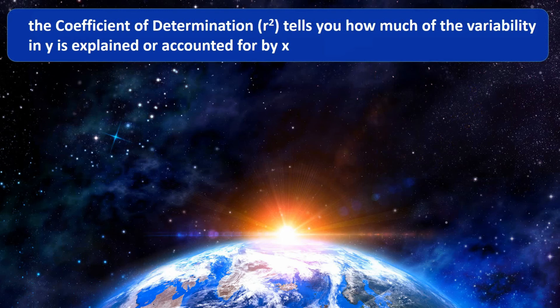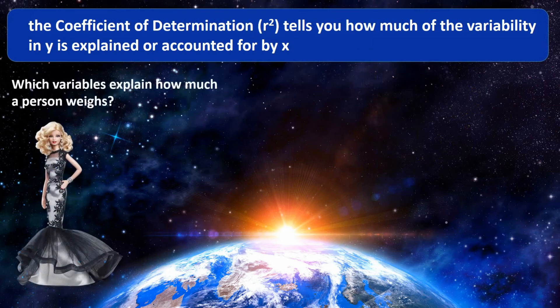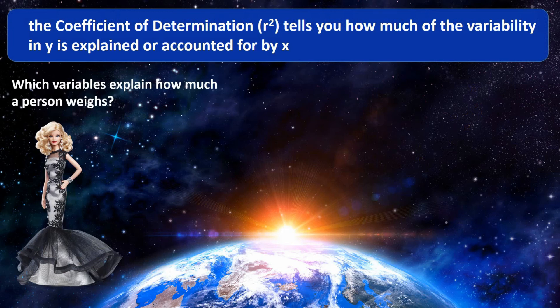R-squared tells you how much of the variability in Y is explained by X, giving us a sense of the strength of the relationship. Let's look at an example: what explains somebody's weight? Clearly there is variability in weight — some people are very thin, some are around a healthy weight, and some are very heavy. So let's say weight is variable Y. What might account for variability in weight?